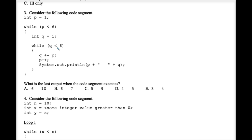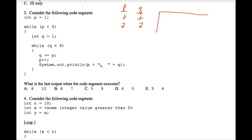Number three: what is the last output when this code segment executes? p begins with one — it is less than six. q is declared and initialized to one in the body of the outer while loop. We hit the inner while loop and check if q is less than six, which it is. q plus equals p — that means change q to q plus p, so q becomes two. p plus plus. We system.out.print p and q, so 2 and 2 prints on a new line.